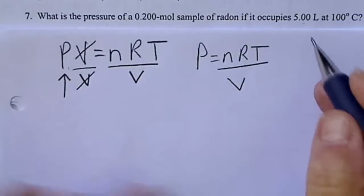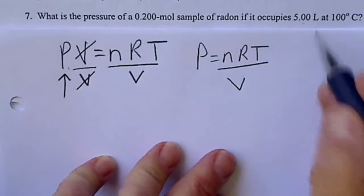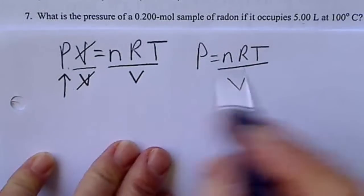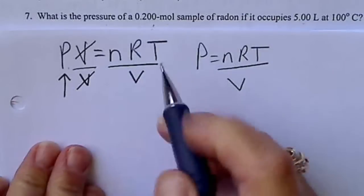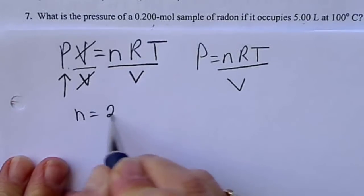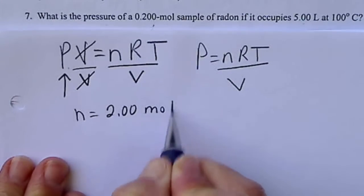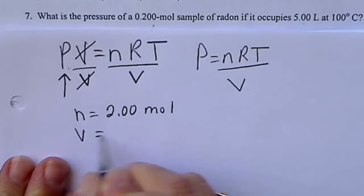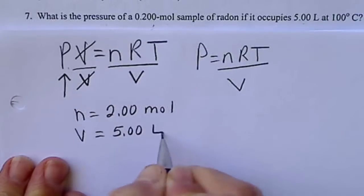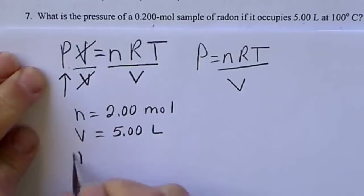We see from the problem that the volume is 5 liters. The n is the moles of a gas, so it's not a bad idea to write that down. n is 2 moles, the volume is 5 liters, and the temperature is 100 degrees Celsius.